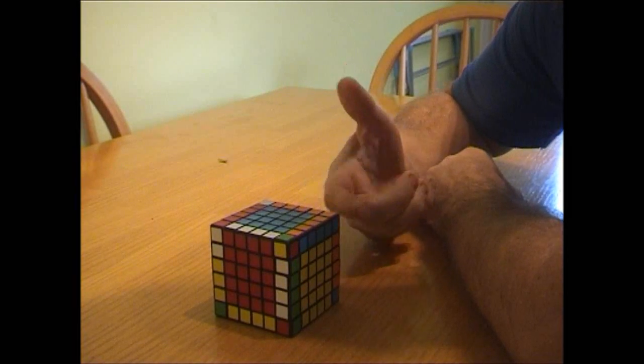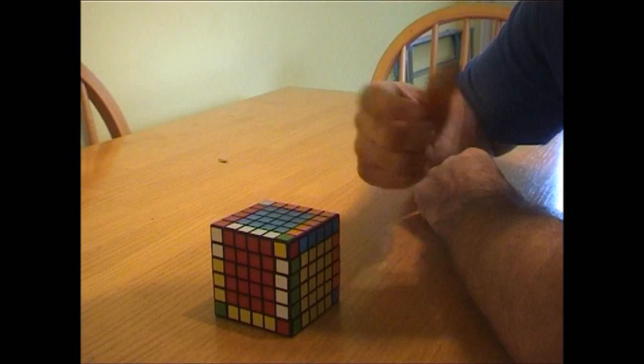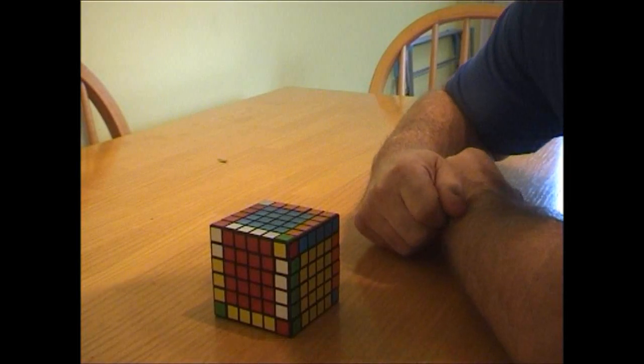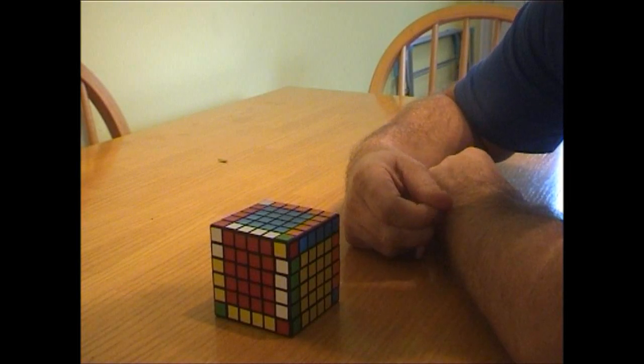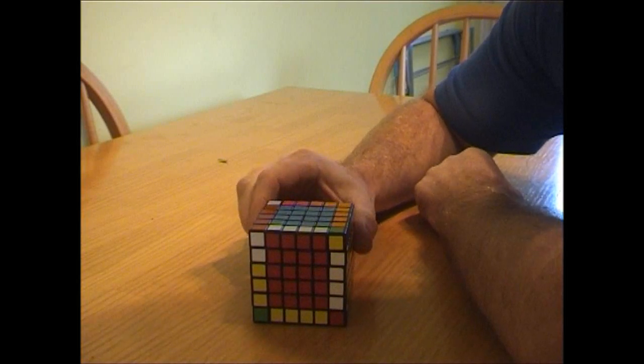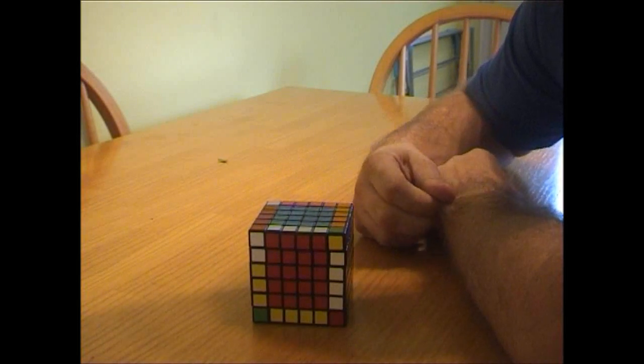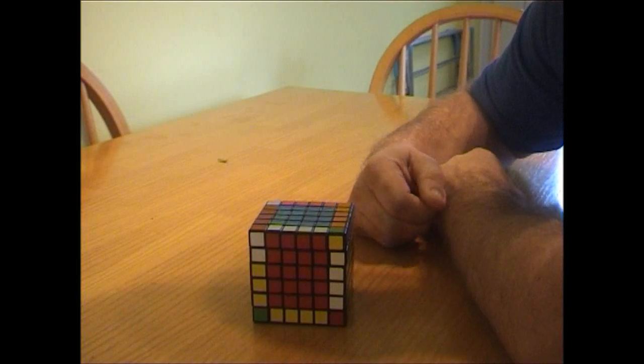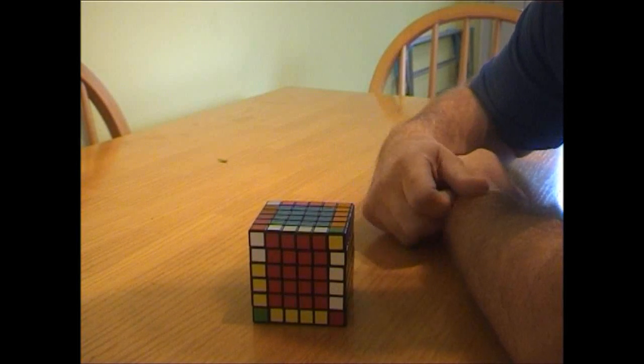And as we're solving it as a 3x3, these issues come up, so we need to know how to solve them. I've already said that you can do the V-cube here with only 3 more algorithms because these are the types of parity you get.